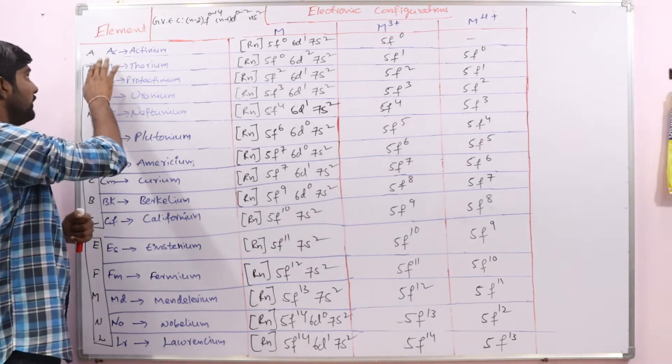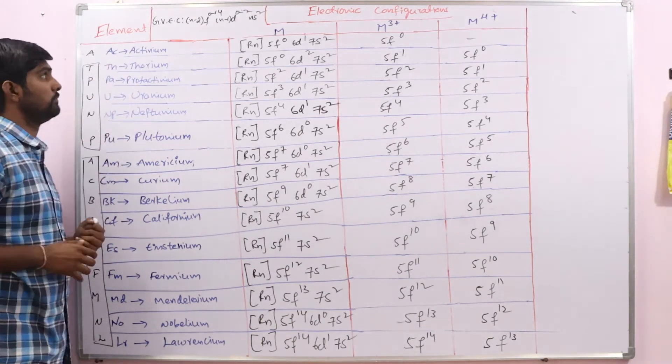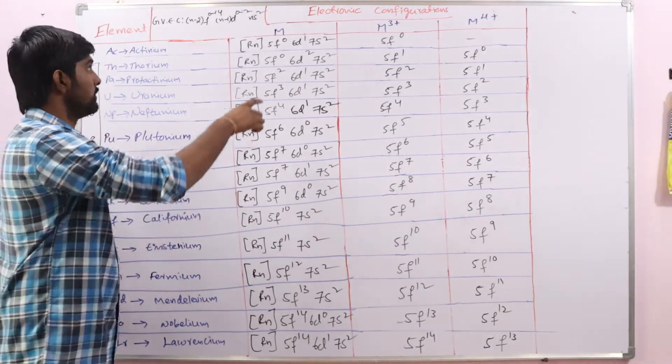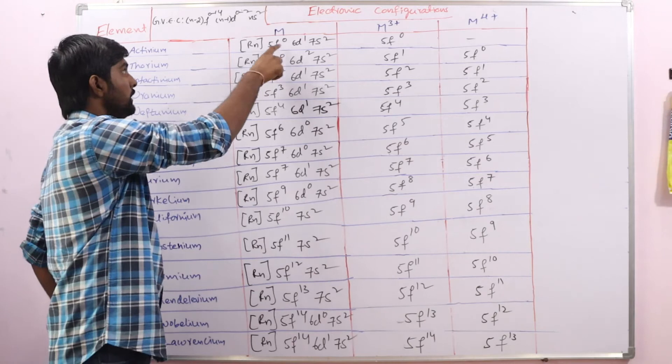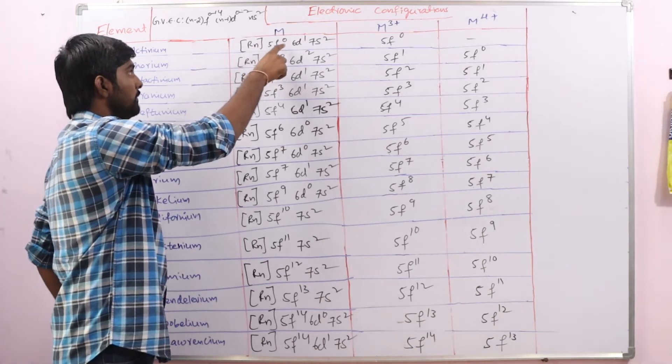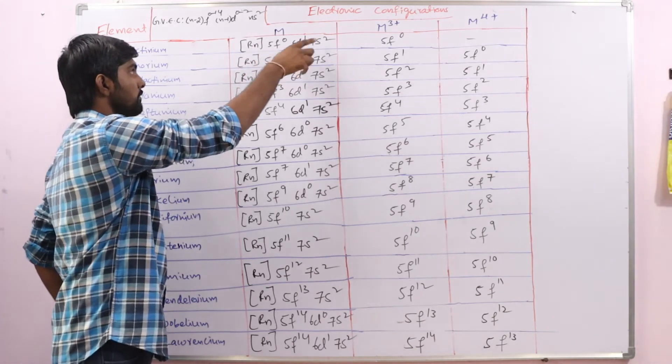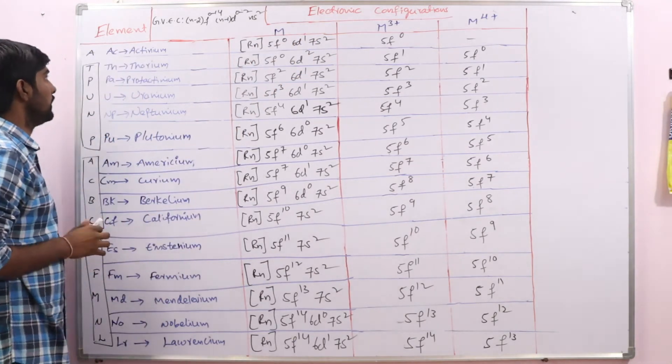So now, first actinium: its configuration is 5F0, 6D1, 7S2.